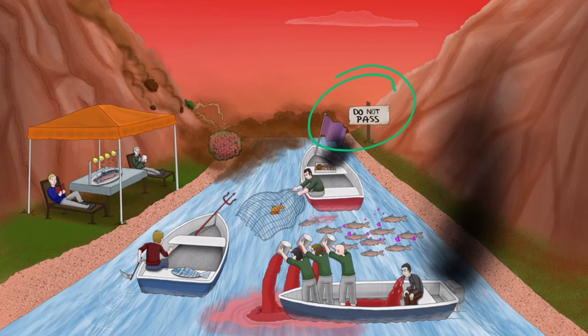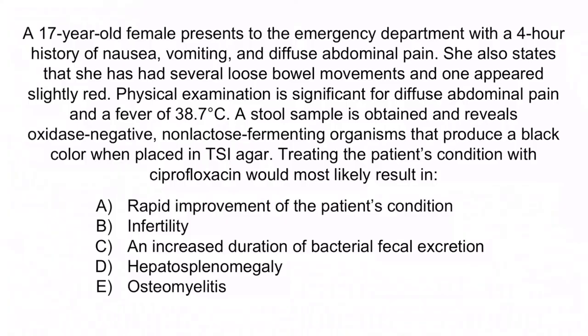In general, it's not appropriate to give antibiotics to a patient who has Salmonella gastroenteritis. This is a self-limited condition, and giving antibiotics can cause more harm than good. Answer A is incorrect — multiple trials have shown that antibiotic administration provides no benefit with respect to the duration of illness. B is incorrect — infertility is not a known side effect of ciprofloxacin. D is not a known side effect of ciprofloxacin either. Rarely, ciprofloxacin can be hepatotoxic, but it's not known to affect the spleen. E is also incorrect — while osteomyelitis is a potential complication of Salmonella especially in sickle cell disease, treating with antibiotics would not influence this outcome. The correct answer is C — an increased duration of bacterial fecal excretion.